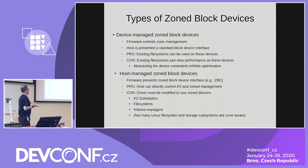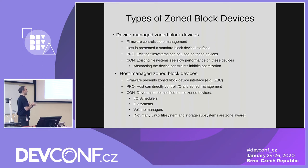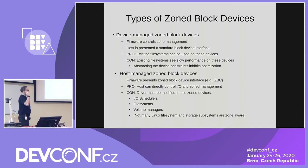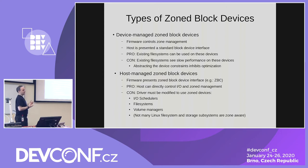The types of zone block devices right now — the older type are called device managed zone block devices. The firmware controls the zone management but exposes to the host a standard block device interface. The advantage is that you can use existing file systems with these devices. The disadvantage is that these existing file systems will end up seeing slow performance because the device abstracts away the management of the zones, and you start to see performance degrade as the drive shuffles between conventional and sequential write only zones. The newer drives are host managed zone block devices — the firmware presents a zone block device interface and tells the driver what the zones are, where the write pointers are, as an extension to the SCSI interface.